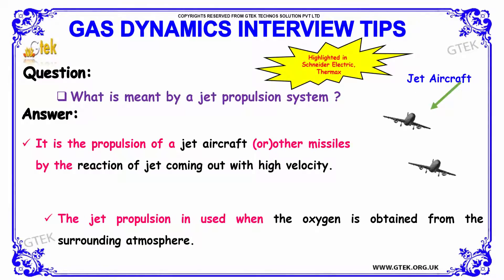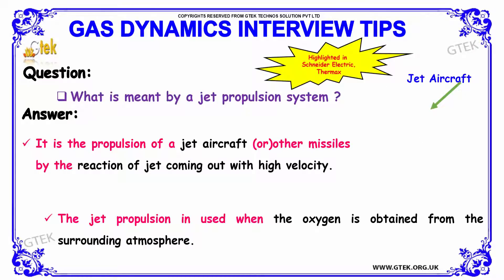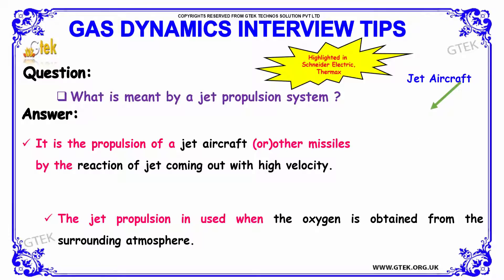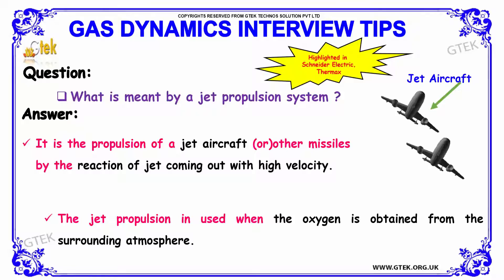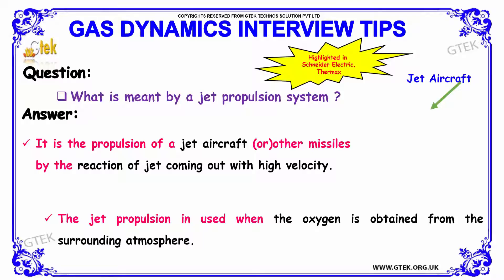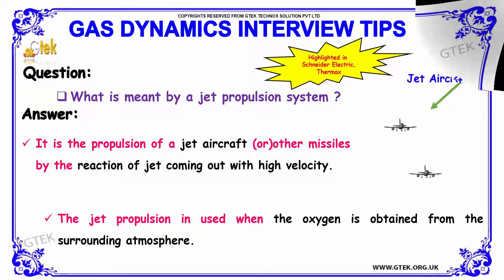Next question: what is meant by a jet propulsion system? A jet propulsion system is the propulsion of a jet aircraft or other kinds of missiles by the reaction of a jet coming out with high velocity. Jet propulsion is used when the oxygen is obtained from the surrounding atmosphere.